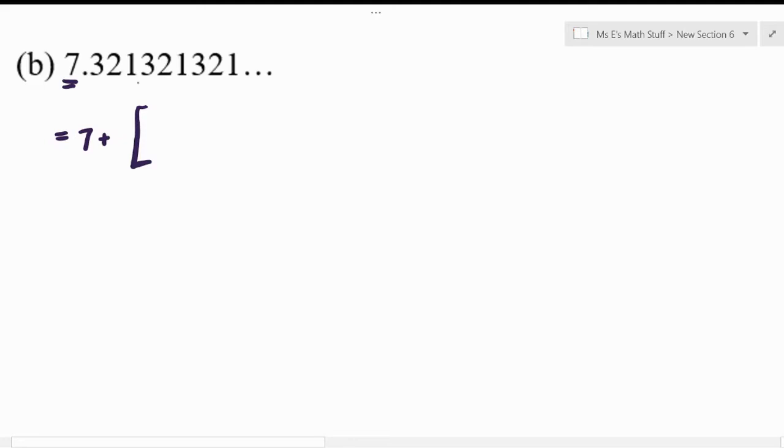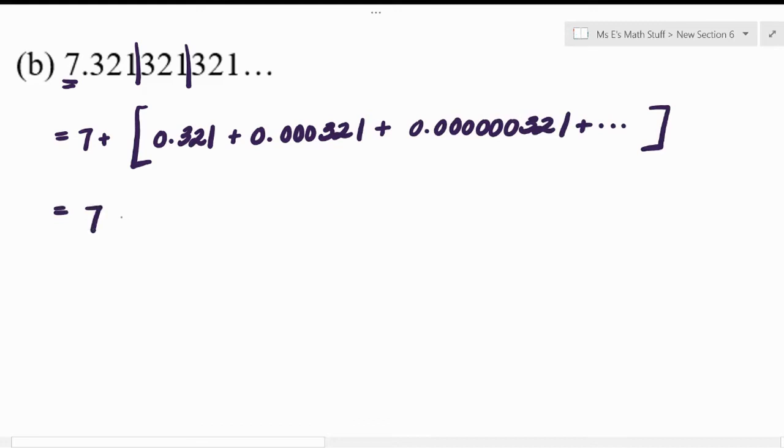Split it by repeating parts. So this would be 0.321 plus 0.000321 plus 0.0000321, and then it would keep going like that. So this would be 7 plus, and then we're just going to worry about the part that actually has the pattern as far as the sum formula goes.